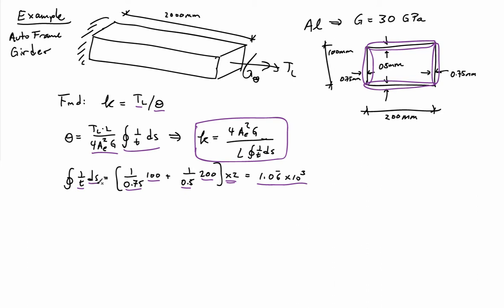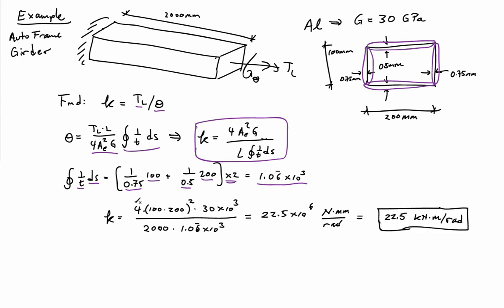So I can now plug everything back into my expression. So I have 4 times the area squared times the shear modulus, and so I've converted that into consistent units, newtons per millimeter squared now, divided by the length, millimeters, and divided by my integral of 1 over TDS.